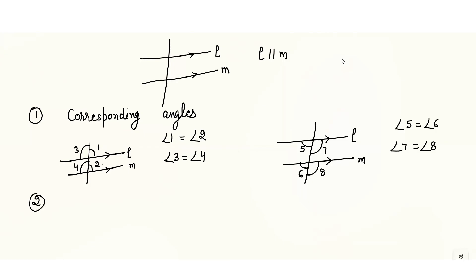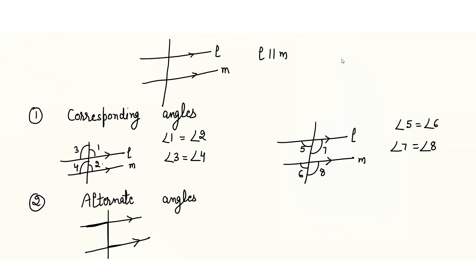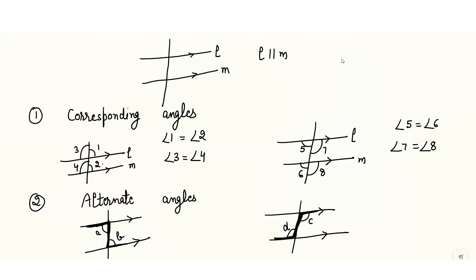Then we have another set of angles which are alternate angles. Alternate angles are the angles between the parallel lines that form a Z-shape. This represents a Z, or a mirror image of Z. So angle A and angle B are alternate, and angle C and angle D are alternate. That means alternate angles are equal in parallel lines — angle A equals angle B, and angle C equals angle D.